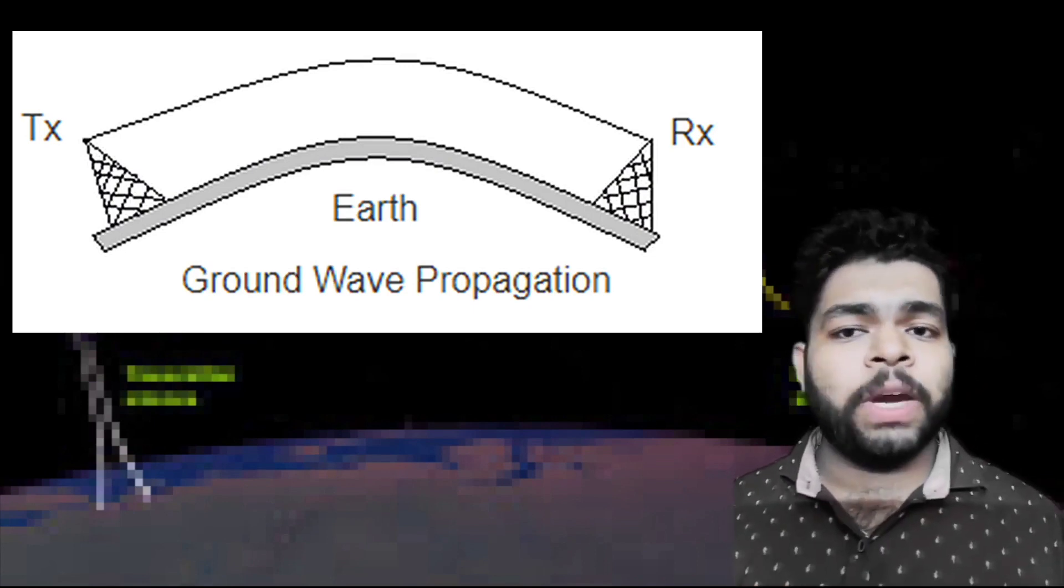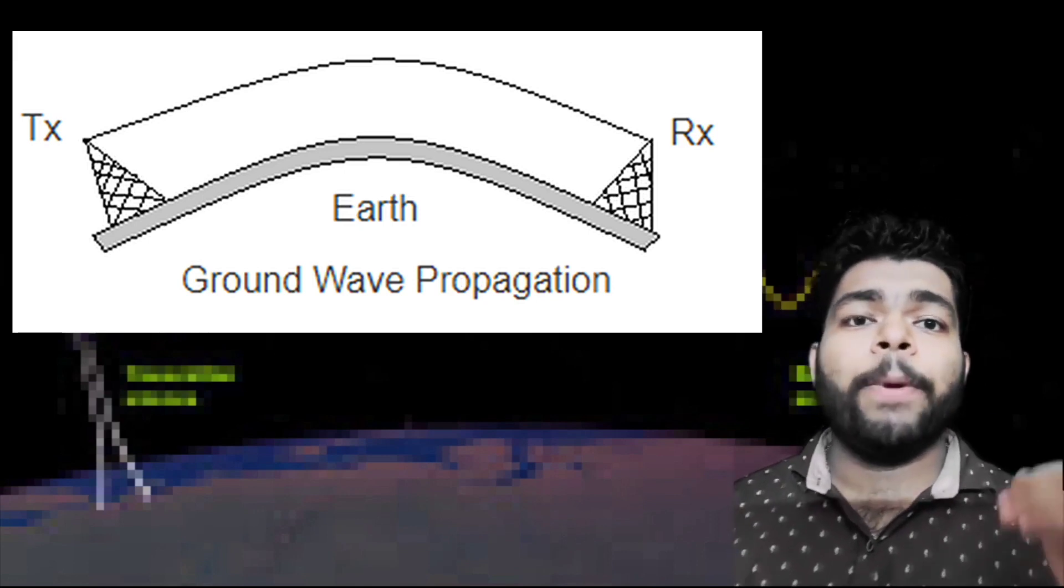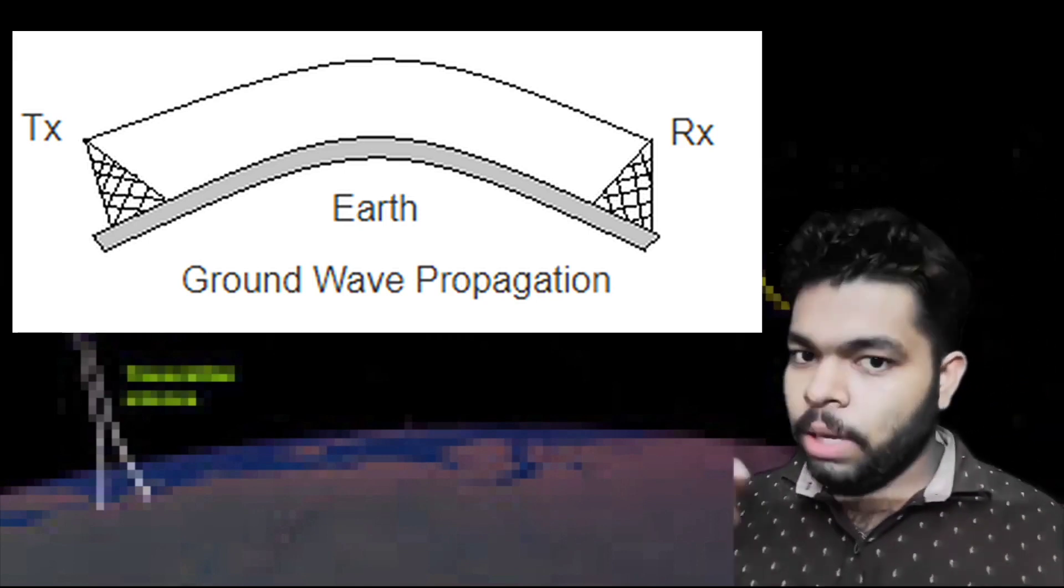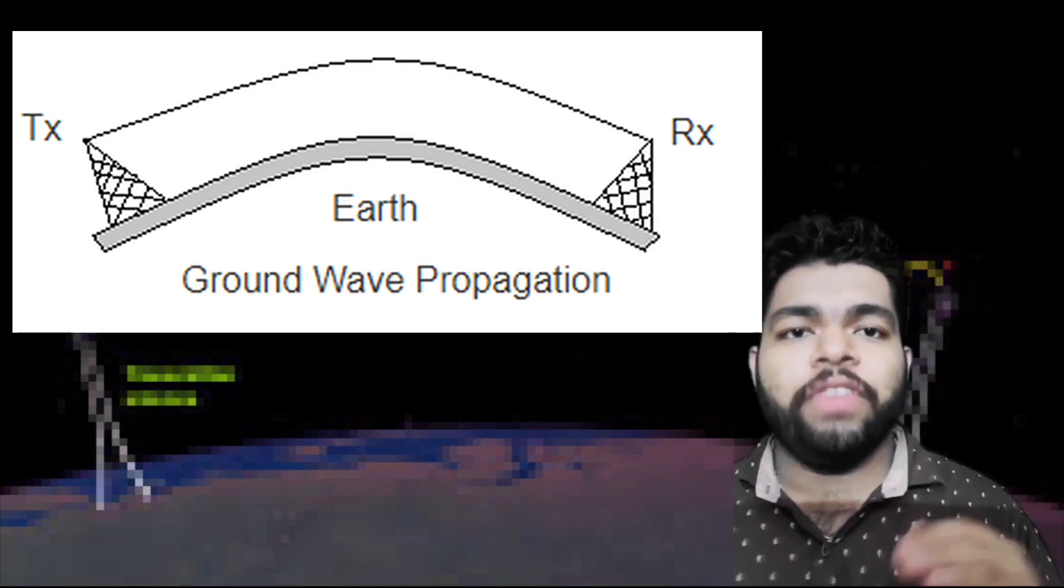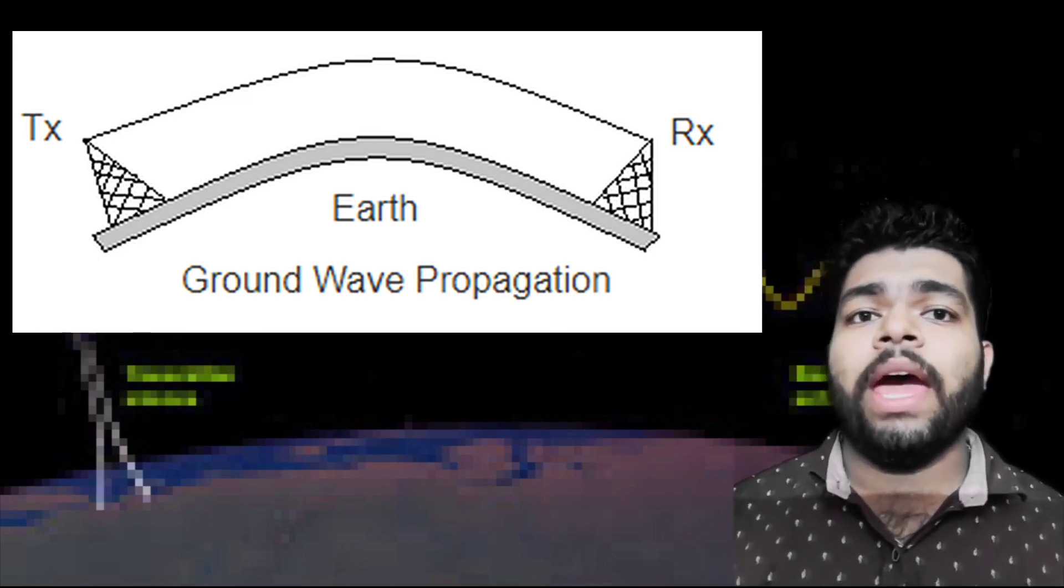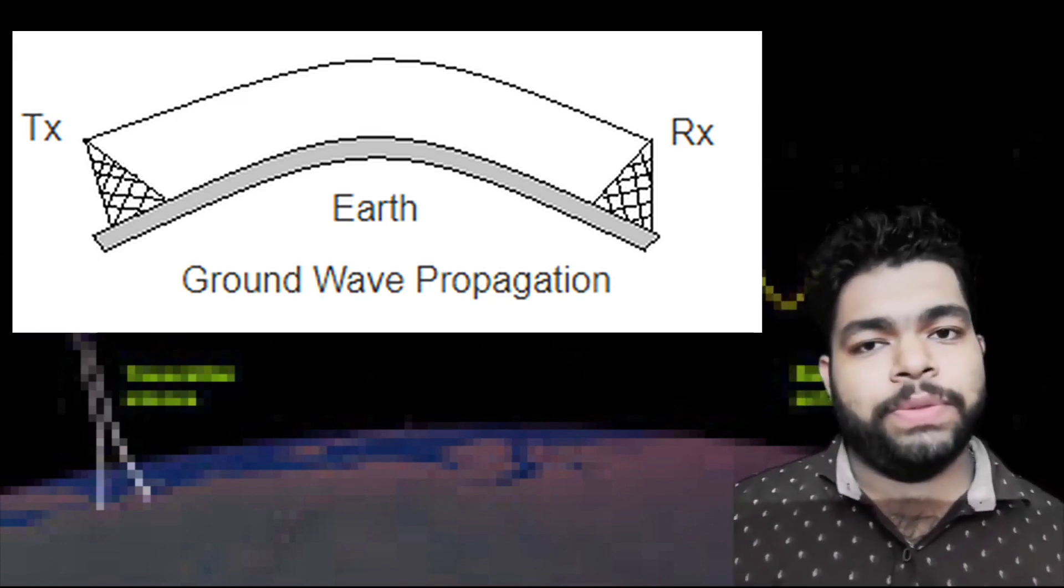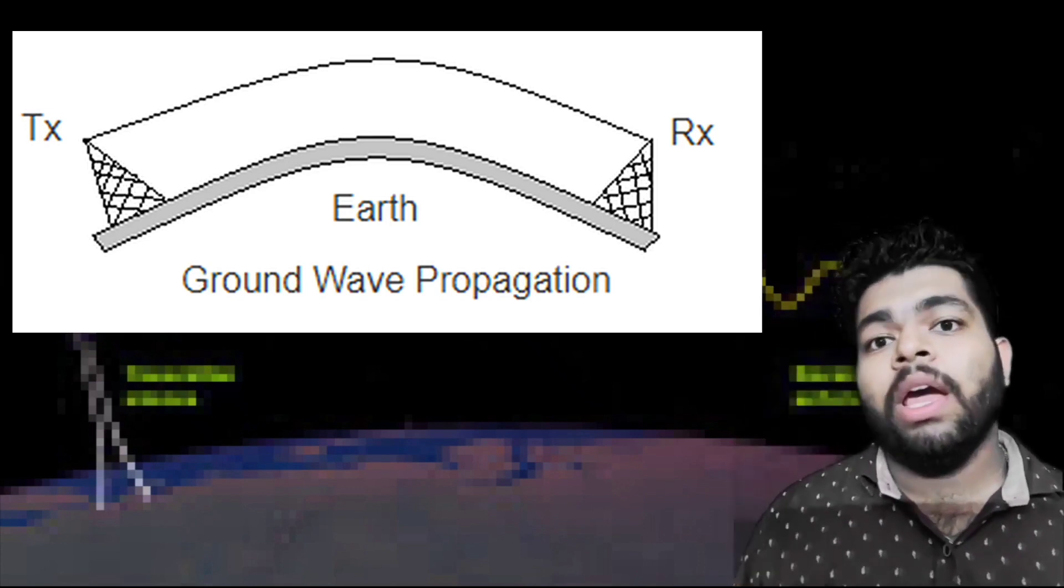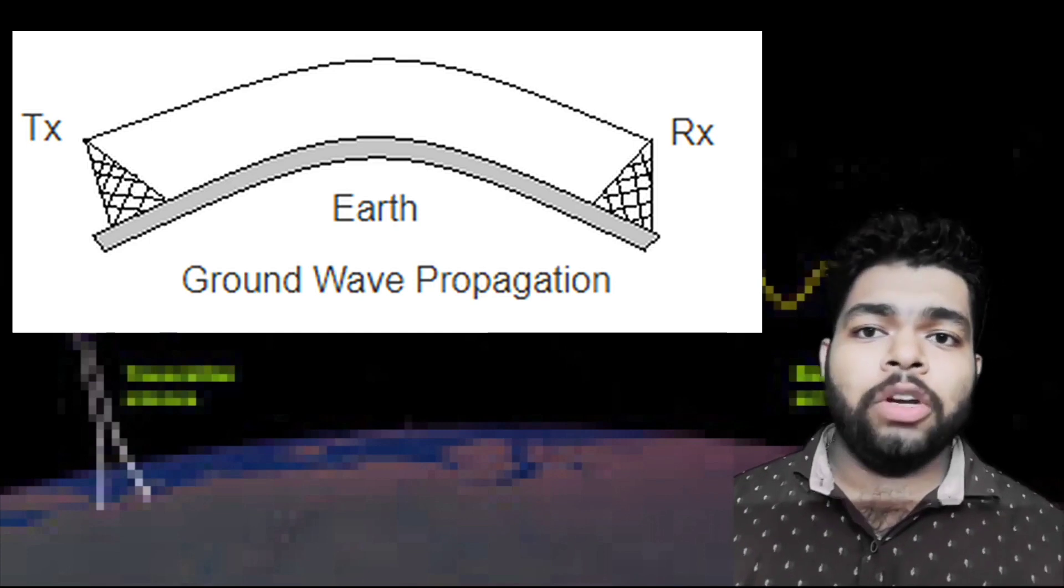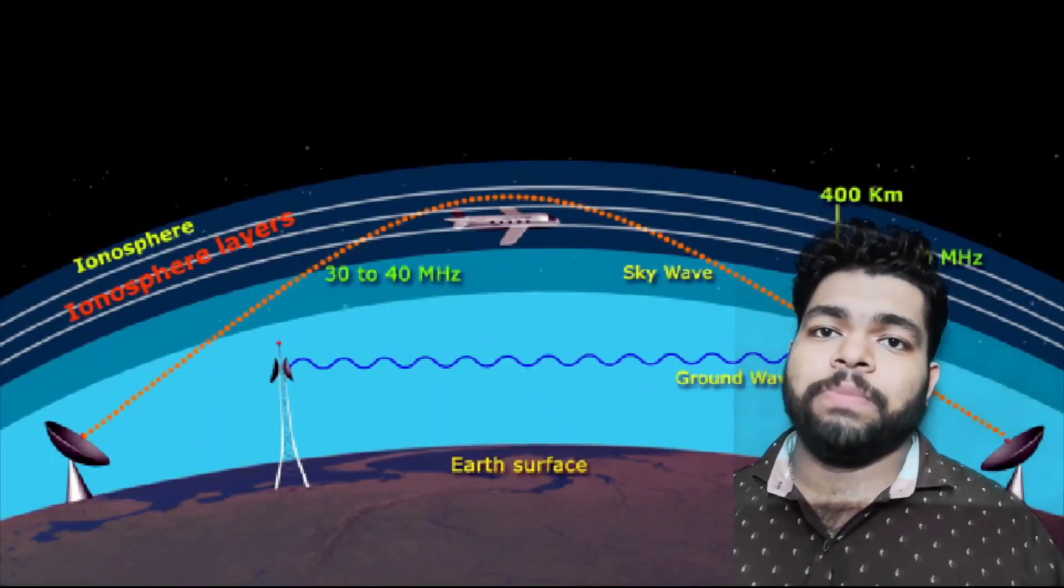The propagation path near Earth's surface shows multiple paths for communication when the transmit and receive antennas are on Earth. If the transmit and receiving antennas are in line of sight, then the direct path exists. The propagating wave is called the direct wave.